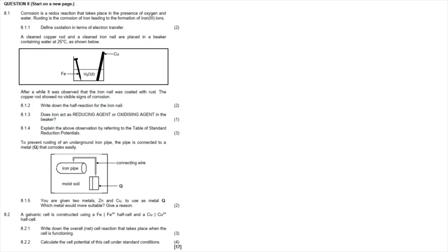Question 8: Corrosion is a redox reaction that takes place in the presence of oxygen and water. Rusting is the corrosion of iron leading to the formation of iron-3 ions. Question 8.1.1 — define oxidation in terms of electron transfer. Oxidation is a loss of electrons.